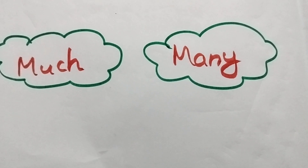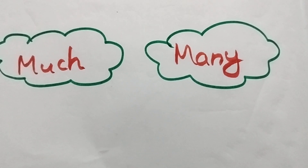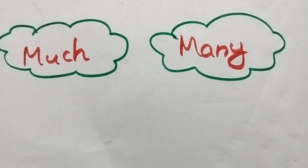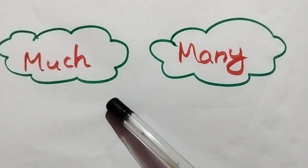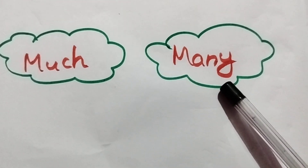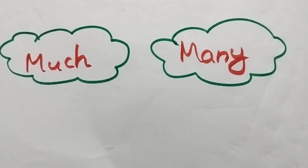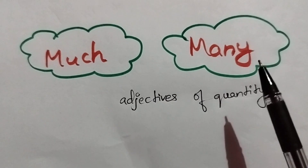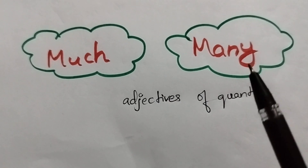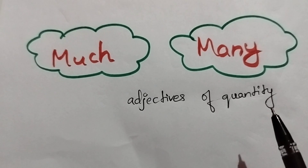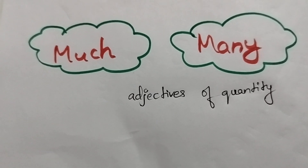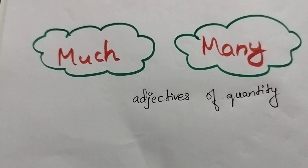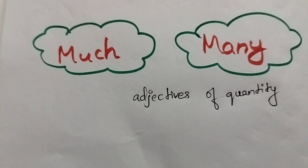Welcome to my YouTube channel. In this video I'm going to explain certain conditions related to using 'much' and 'many' in English sentences. Much and many are used as adjectives of quantity — they are describing words used before nouns to explain the quantity.